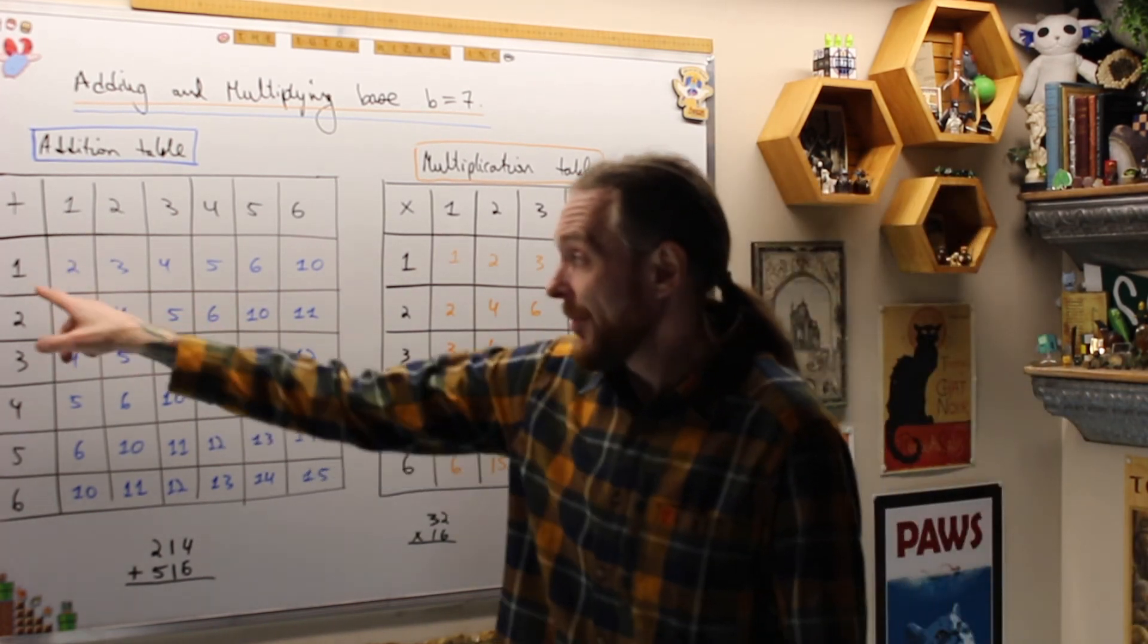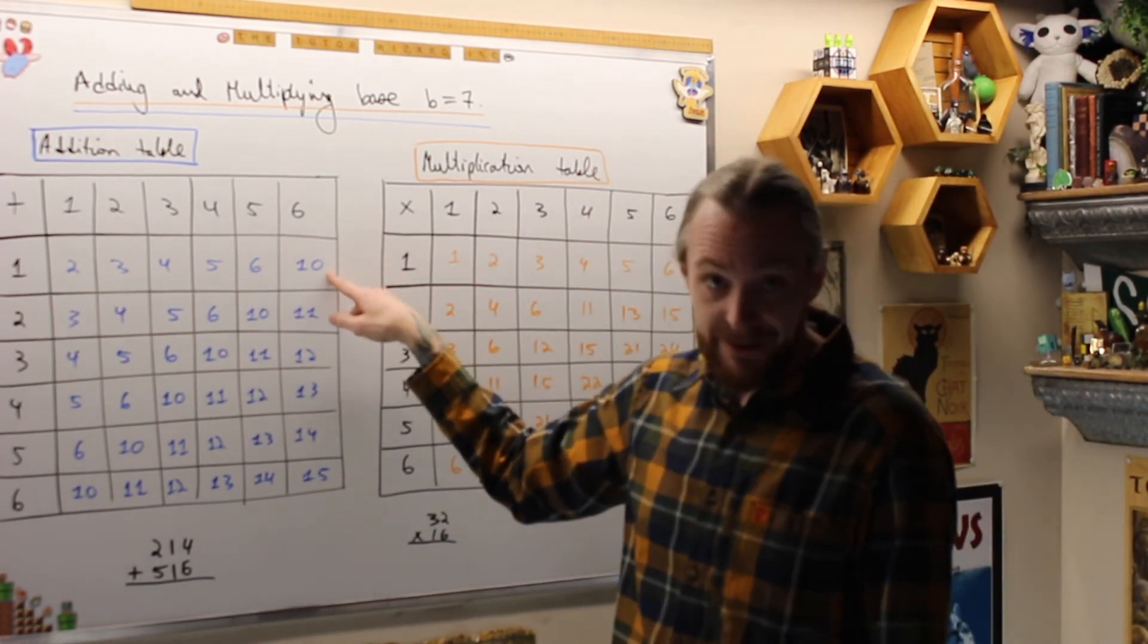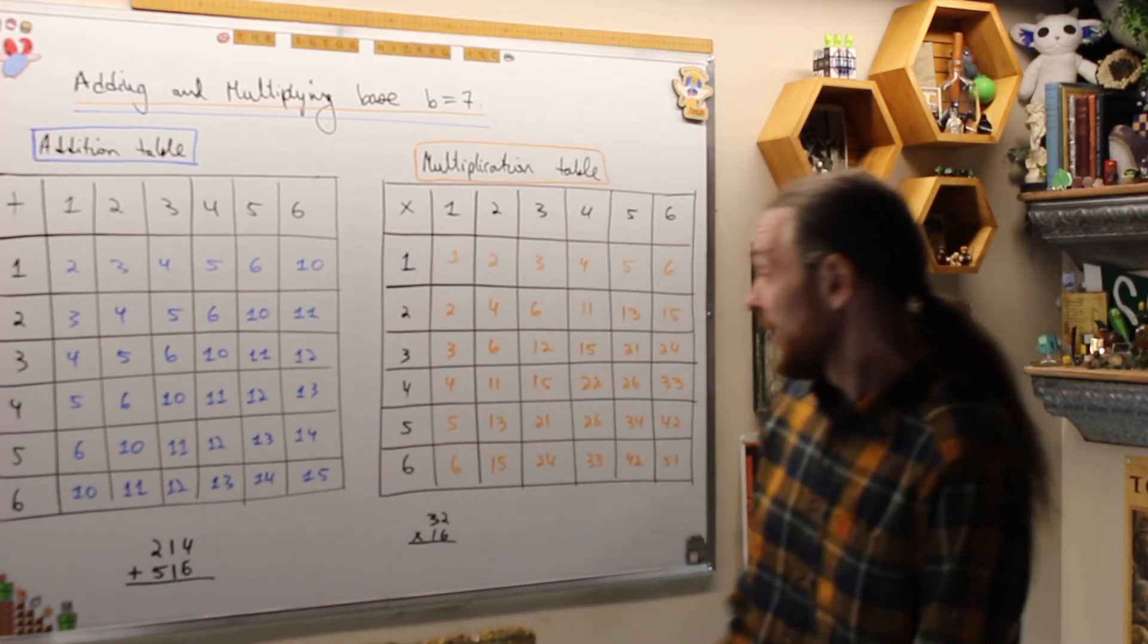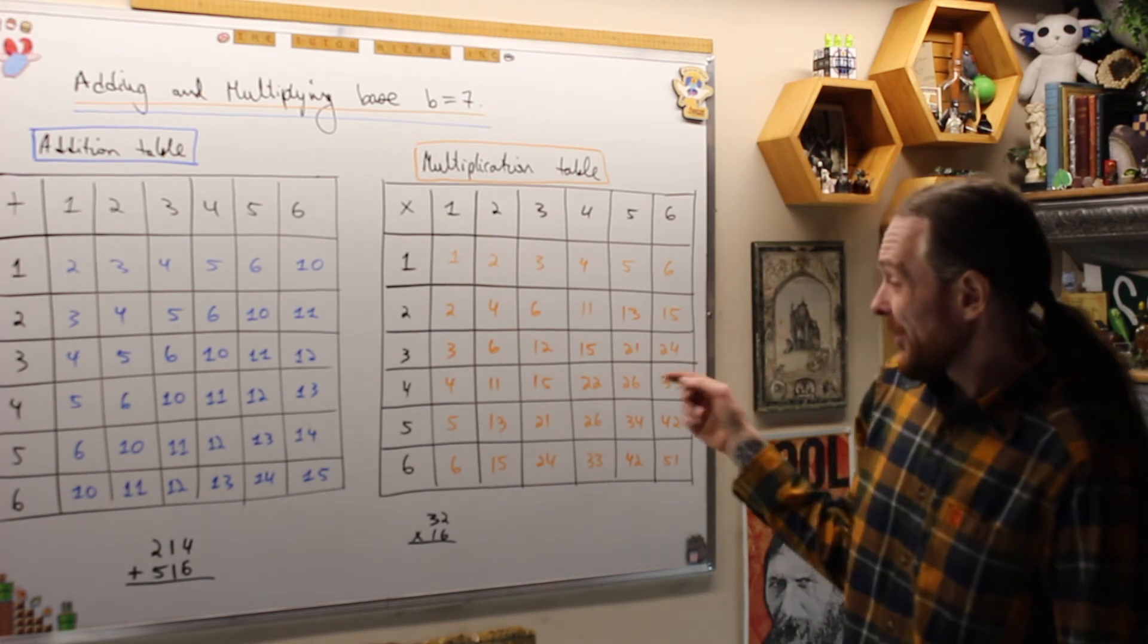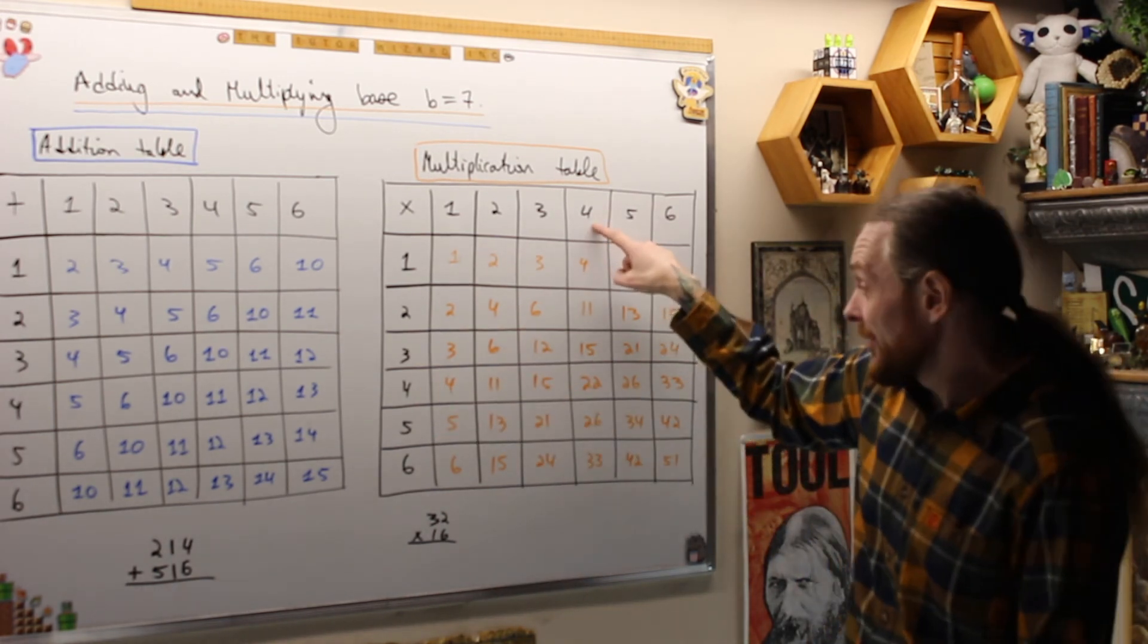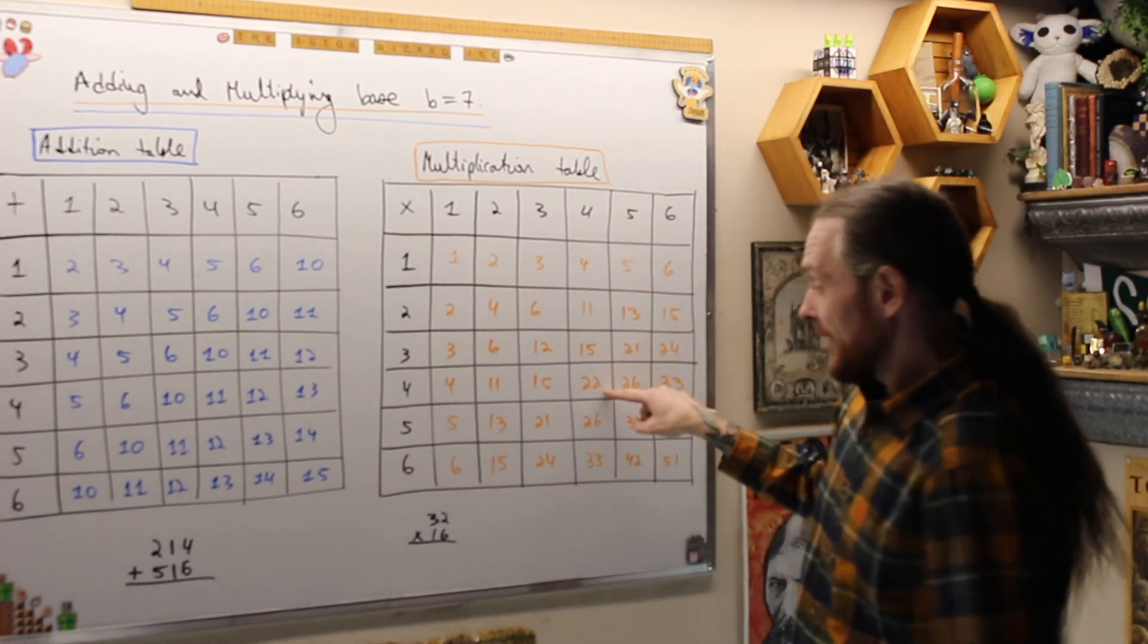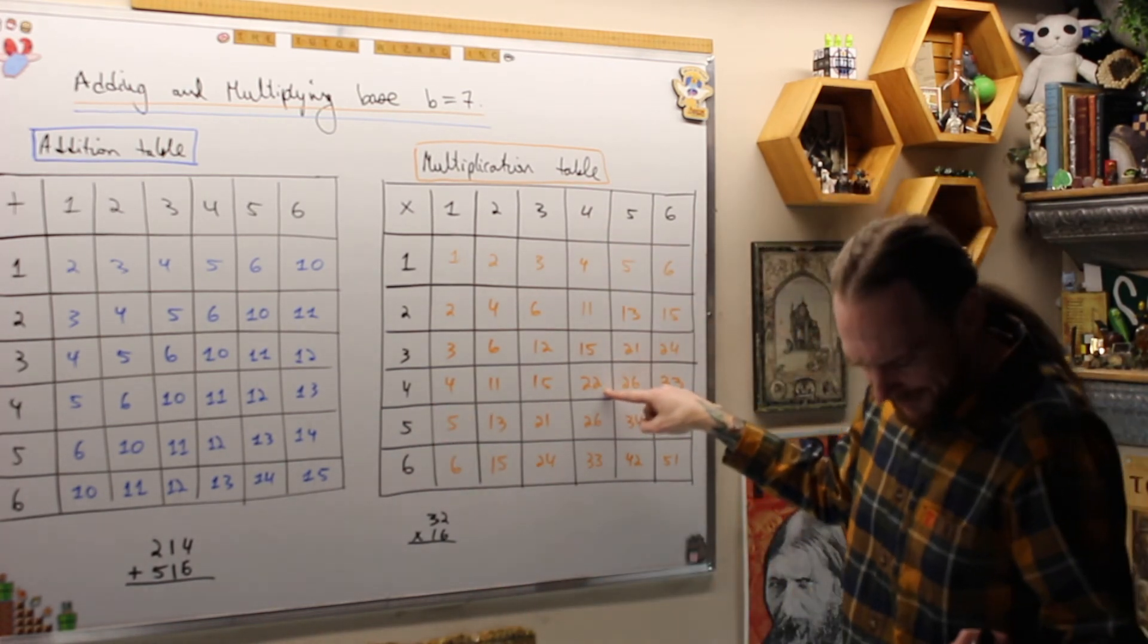So when I add, remember 1 plus 6 is 7, but that's one group of 7 plus 0, so that's 1-0. Over here, same thing, I'm multiplying. 4 times 4 is 16 in base 10, what you're used to. But when I look, why is it 22? Because that's 2 times 7, which is 14 plus 2, which is 16.